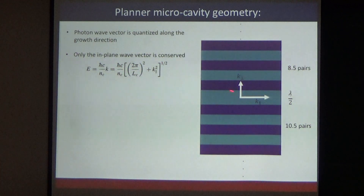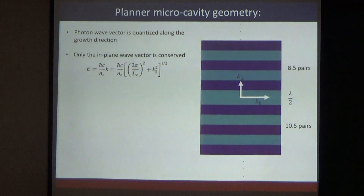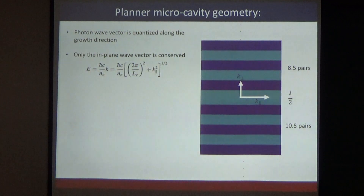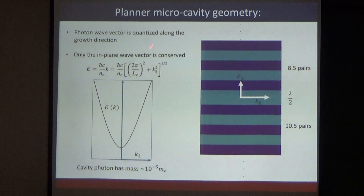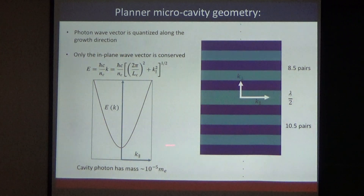You can write down the energy of the cavity photon as an equation: it is 2π divided by L_C, where L_C is the cavity length (lambda/2), plus a k-parallel term. This dispersion is approximately parabolic — although a photon in vacuum has linear dispersion, inside the cavity plotting energy as a function of k-parallel gives a parabola, so it has some finite effective mass. You could also wonder why the exciton dispersion is always plotted as flat.